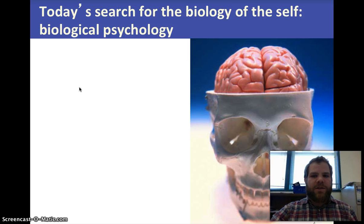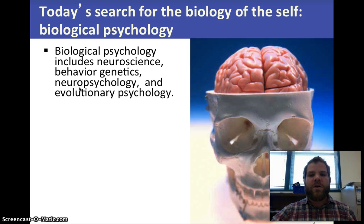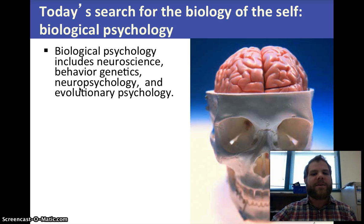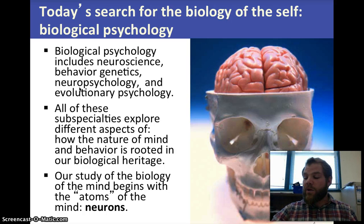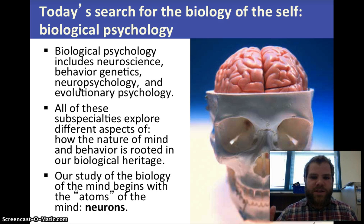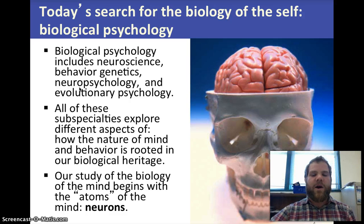Today's search for the biology of self is called biological psychology. This includes neuroscience — how the brain works — behavior genetics, neuropsychology, and evolutionary psychology — how human psychology has changed and adapted over time. All of these subspecialties explore different aspects of how the nature of mind and behavior is rooted in our biological heritage, looking at how genes, brain specialization, brain damage, and conditioning affect the way we think.